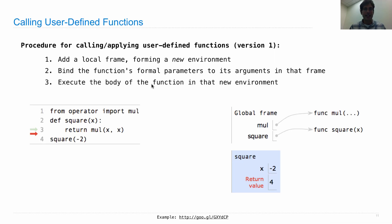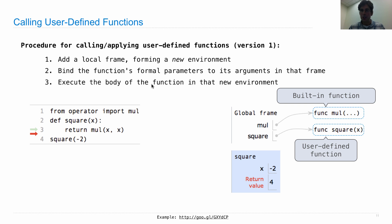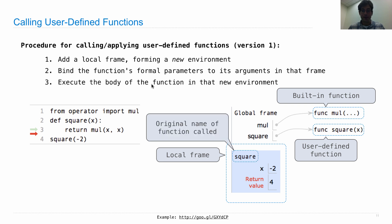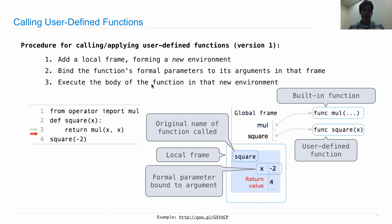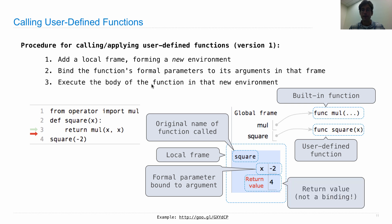Here's a screenshot of what we just saw. We have a built-in function and a user-defined function — they look basically the same, except the user-defined function shows the formal parameter x. We have a local frame introduced in the first step of the procedure. The original name of the function labels the local frame just so we can keep track. What is important is the binding between the formal parameter x and the argument value -2. We also show the return value of 4 in the frame as an annotation to show what happened.